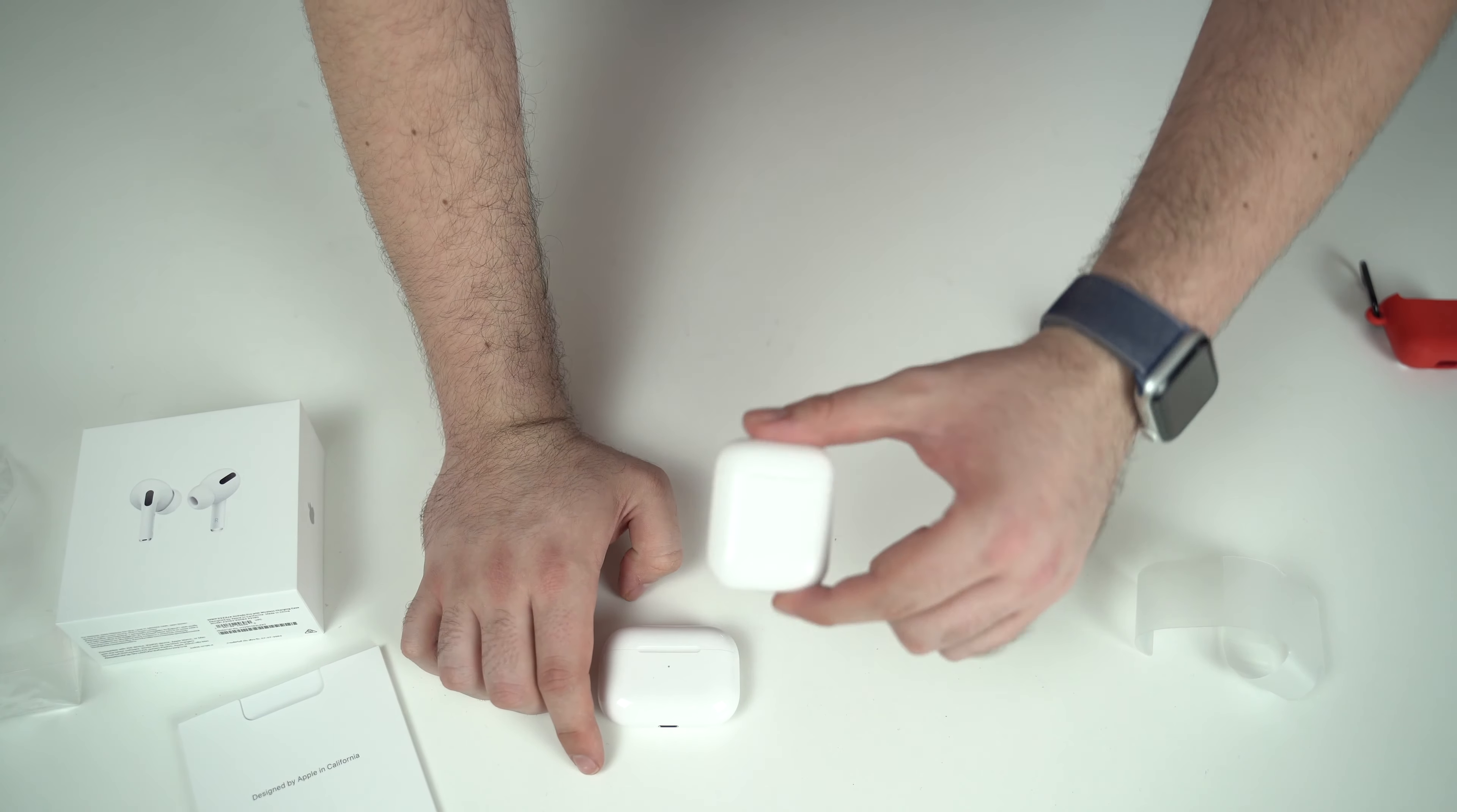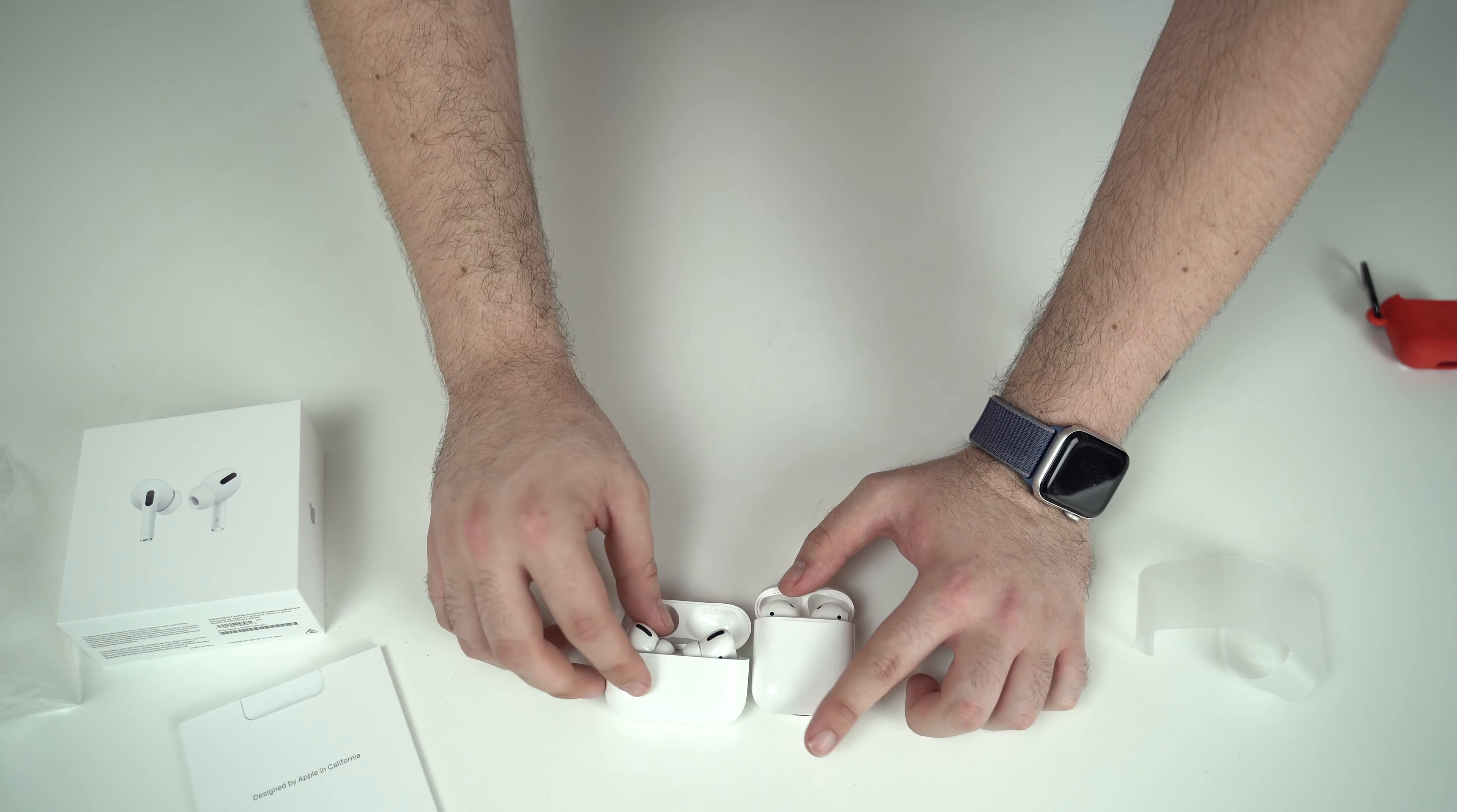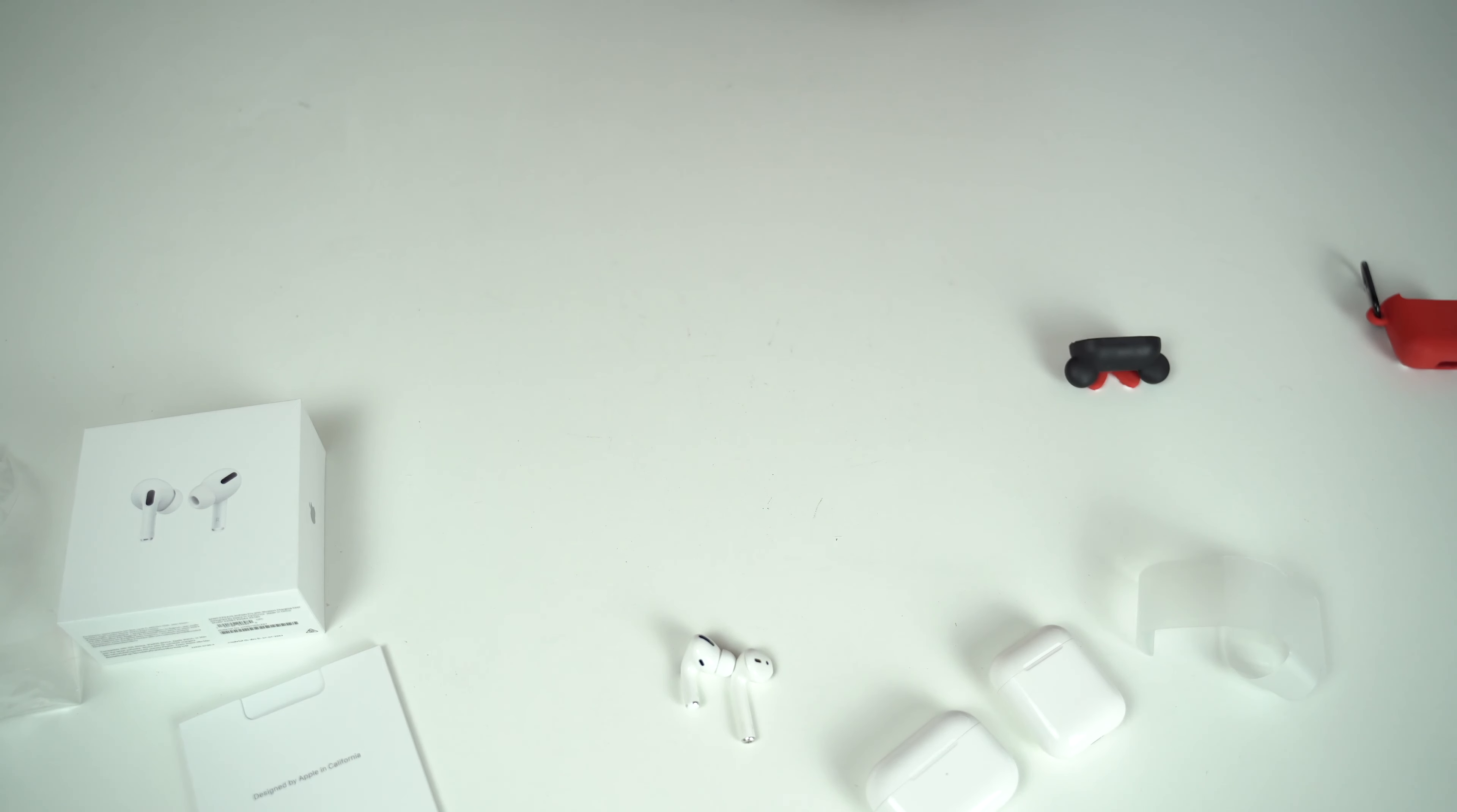AirPods Pro. Normal AirPods. Size difference. These ones are shorter. These ones are longer. These ones are wider. These ones are skinnier. Open them up. Looks pretty much the same. Grab an AirPods Pro out. Grab the other one out. Normal AirPods. You can see. AirPod Pro is a lot shorter. AirPod is a lot longer. Big difference.